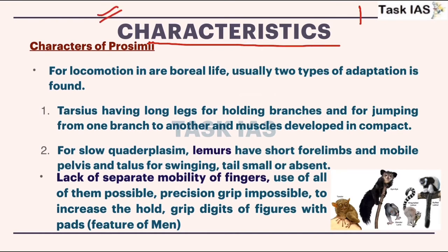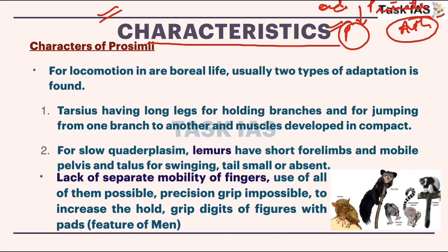The two suborders are prosimians and anthropoids, because our order is Primates and these two are further suborders. I will discuss characteristics of these two groups. These differences and particular characteristics will help you write any analytical question, because UPSC especially in anthropology paper is asking very analytical questions.